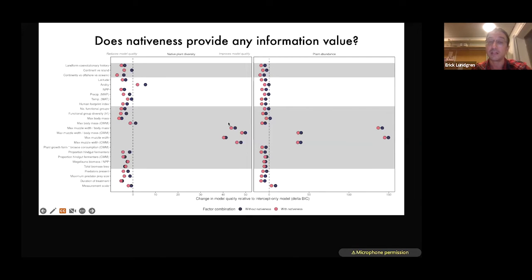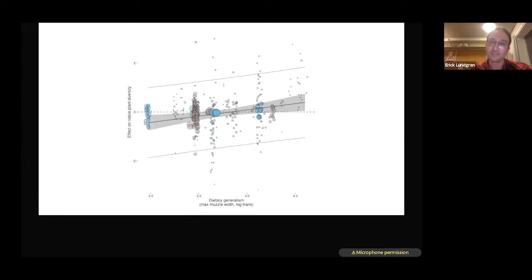Each of these points is that factor. The blue is with that factor without nativeness and the pink is that factor with nativeness. The dashed line is an intercept only model, basically just the average, no statistics explaining what we're finding. The main point is that in all cases, including nativeness, this cornerstone variable, this cornerstone idea actually reduces model quality in explaining native plant diversity and plant abundance. The things that do improve our understanding of these impacts is actually traits. The traits of these animals and the traits in particular that matter is a weird trait. It's muzzle width. Maximum muzzle width is a proxy for how specialized or generalist animals are. Animals like deer are over here on the left. These animals tend to have a more negative effect on plant diversity because they are selective feeders.